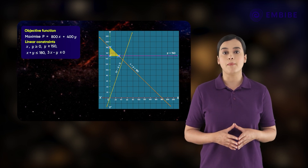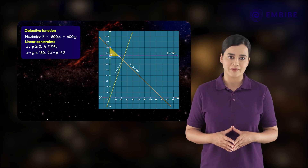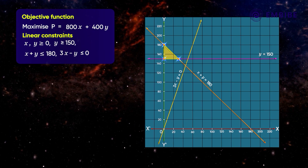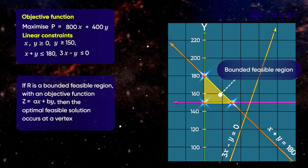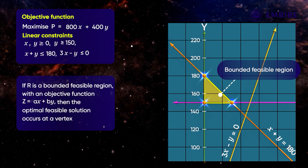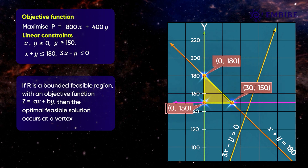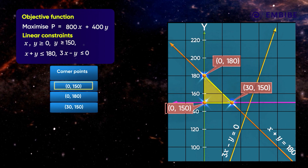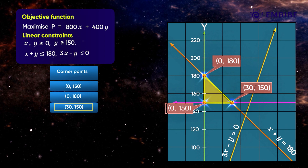Thus, we have a bounded feasible region where all points satisfy all the linear constraints. However, there are infinitely many points in the feasible region, so how do we find the optimal feasible solution? If R is a bounded feasible region that is a convex polygon with objective function Z = AX + BY, then the optimal feasible solution — whether maximum or minimum — occurs only at a vertex of the polygon. Therefore, we just need to check the corner points to identify the maximum value.